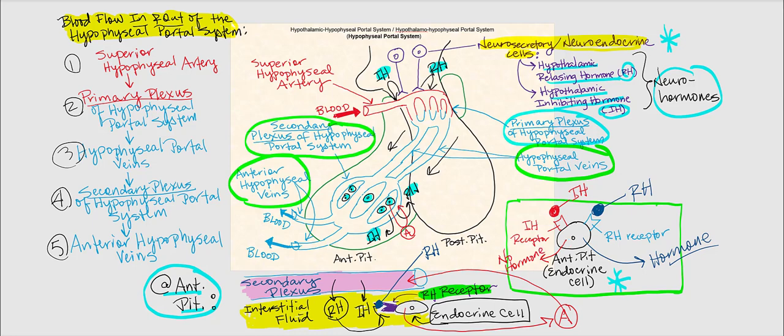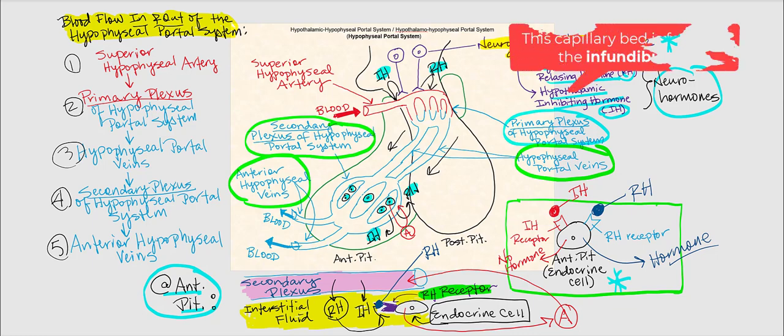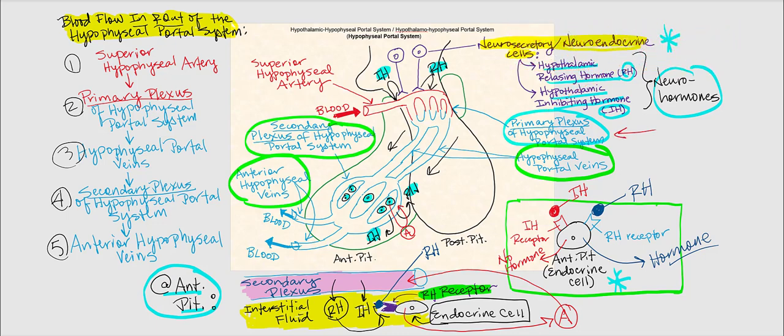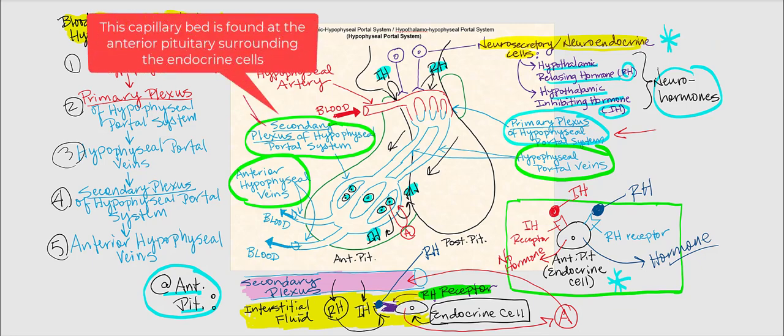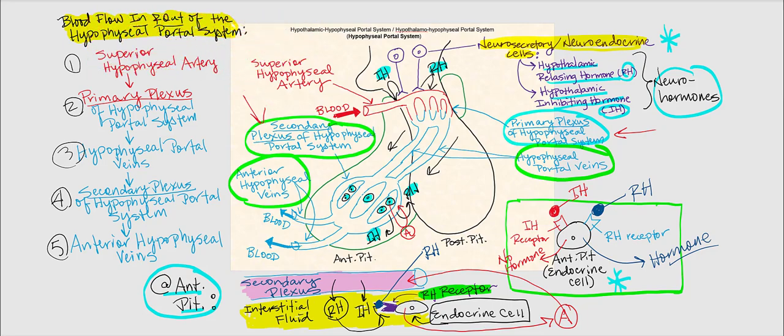One last thing: the location of the primary and secondary plexus. The primary plexus — the first capillary bed — is found specifically at the infundibulum, while the secondary plexus — another capillary bed — is found in the anterior pituitary, surrounding the endocrine cells of the anterior pituitary.